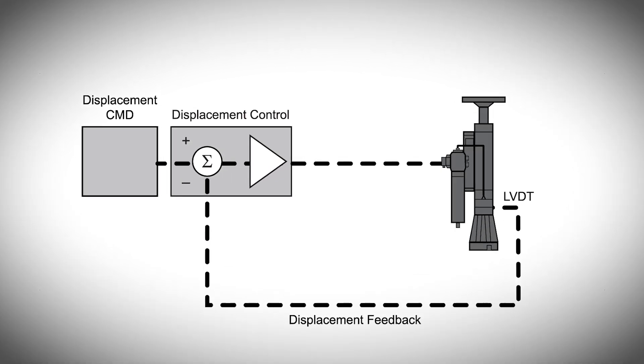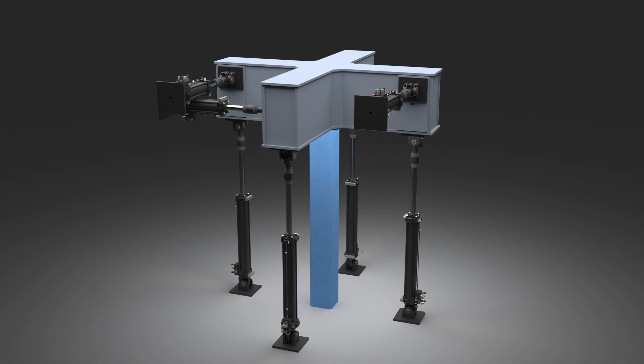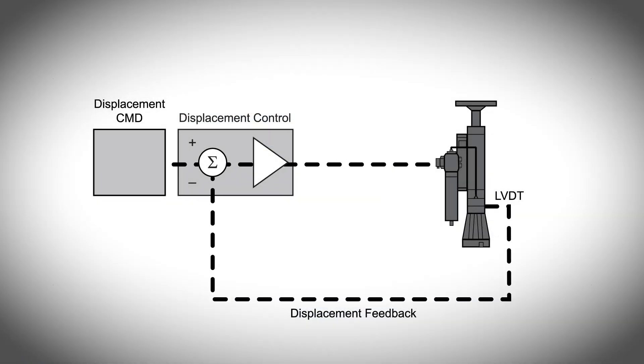When testing a highly stiff physical specimen like a reinforced concrete beam column, however, the displacement commands can be so small that the control system has difficulty imposing them accurately. To address this issue, MTS engineers have developed cascade control.